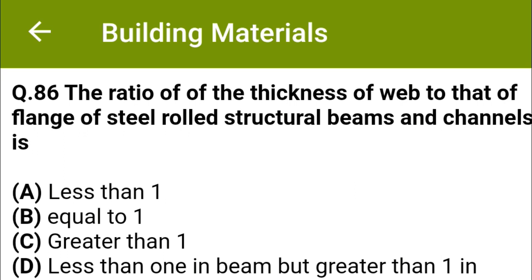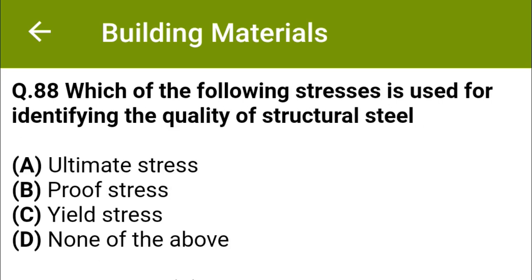The ratio of the thickness of web to that of flange of steel rolled structural beams and channels is: option A, less than 1; option B, equal to 1; option C, greater than 1; option D, less than 1 in beam but greater than 1 in channels. The correct answer is option A, less than 1.